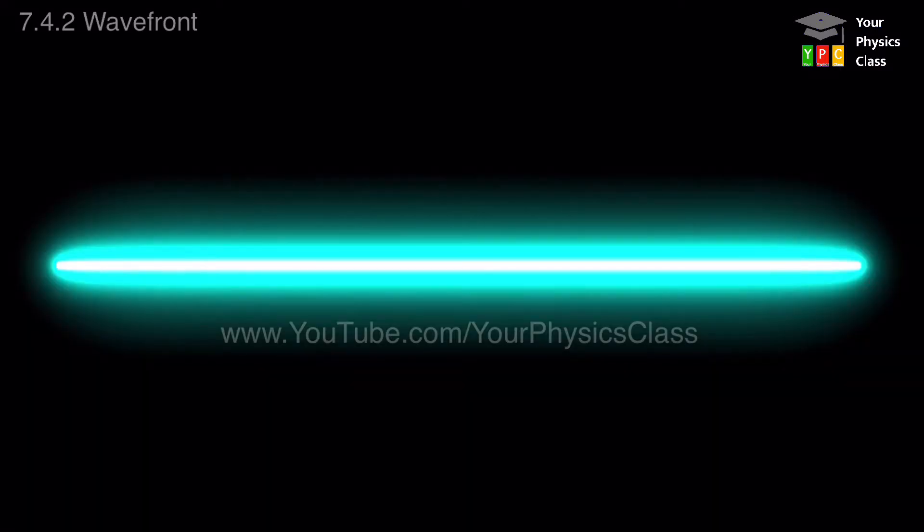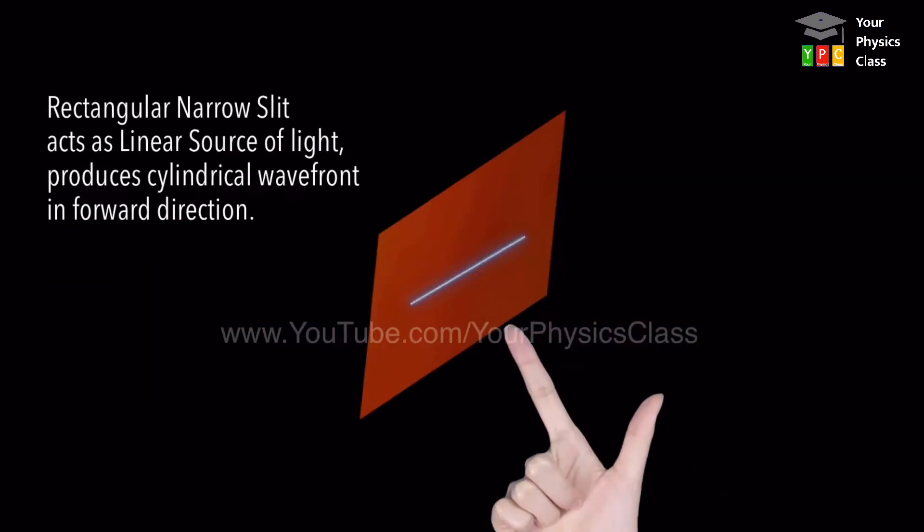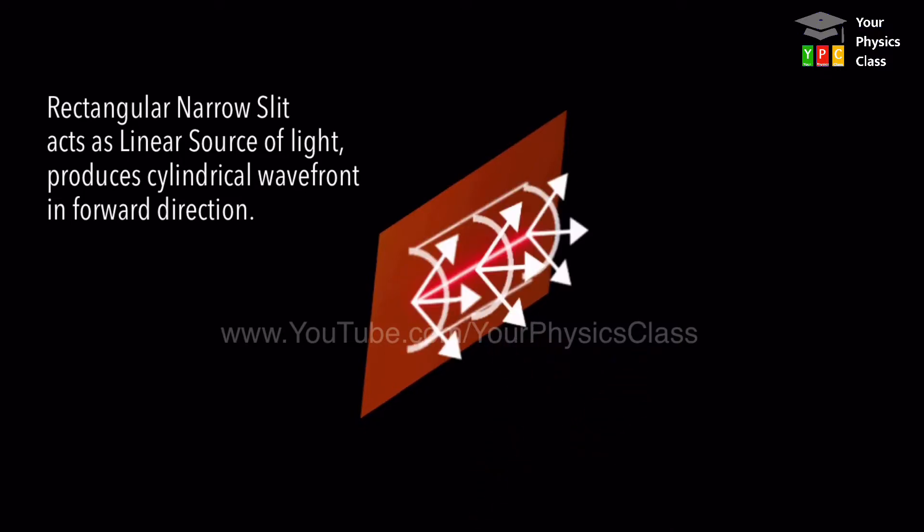If the source of light is linear, then we get cylindrical wavefront. For example, light emerging from rectangular narrow slate produces cylindrical wavefront.